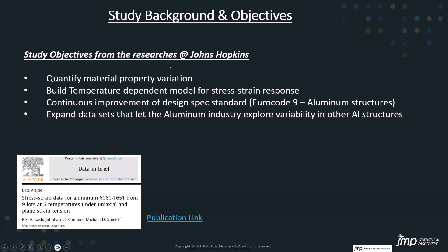And if folks are interested, I do have the publication link. But their objectives here, it's really in that variation that they're trying to study the material property variation. And they mentioned building a model, temperature dependent model for stress versus strain. And we're going to do that in JMP. And then these last two bullets are more around understanding material properties, maybe revising build codes for aluminum structures, or sharing this data with industry so industry can now explore other aluminum structures. So that's kind of the objective of this paper.